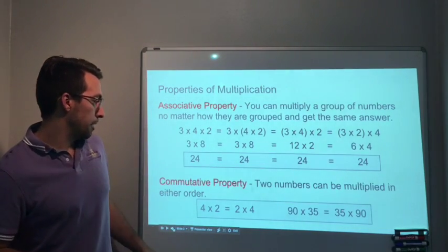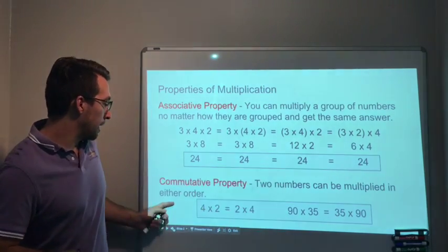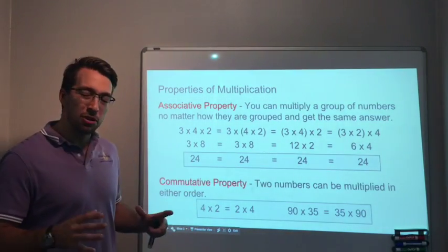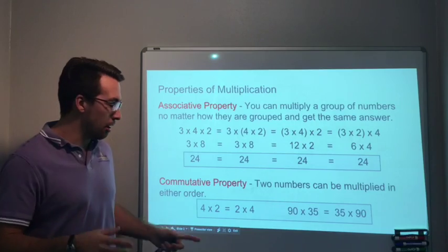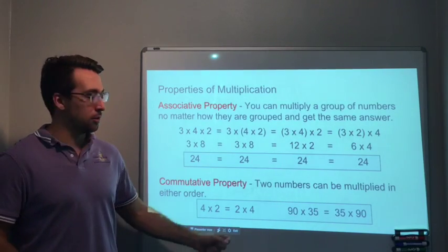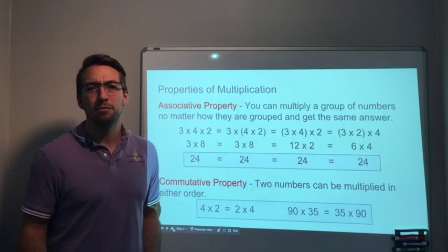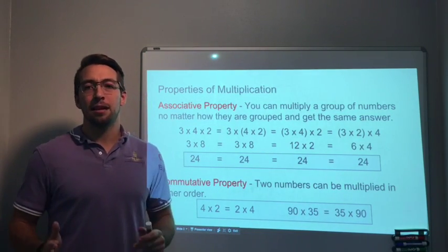Number 2, the commutative property. Two numbers can be multiplied in either order. It's the exact same thing. Except you don't have parentheses, it's just 2 numbers. 4 × 2 or 2 × 4. 90 × 35 and then 35 × 90. It's the exact same thing.